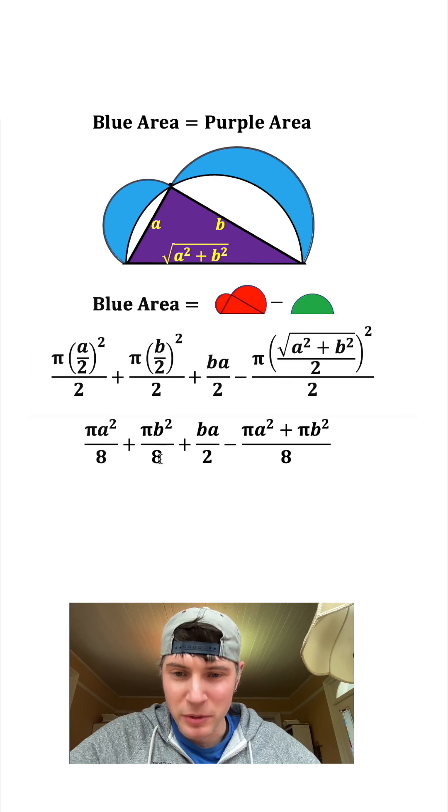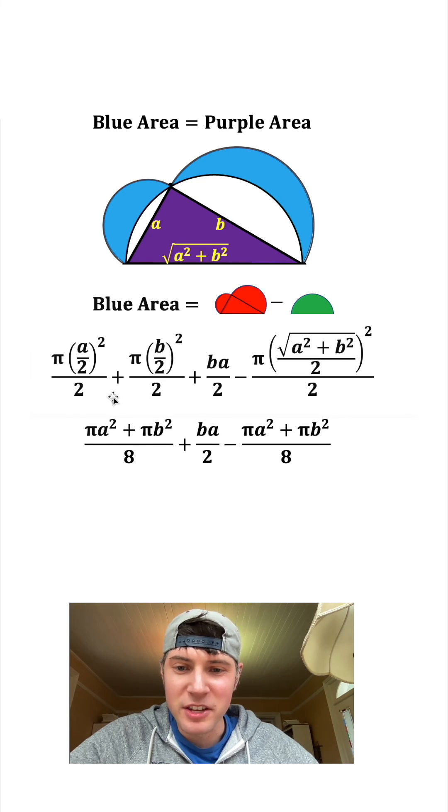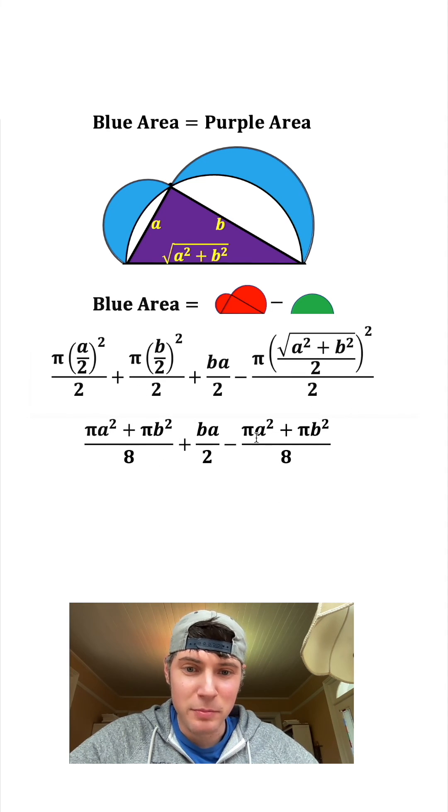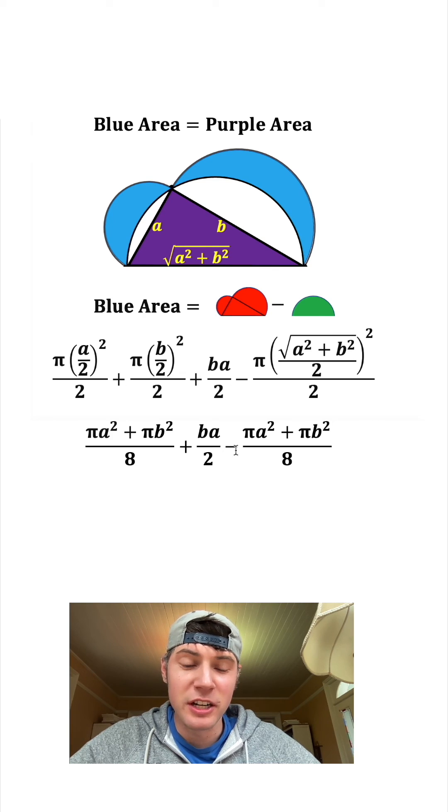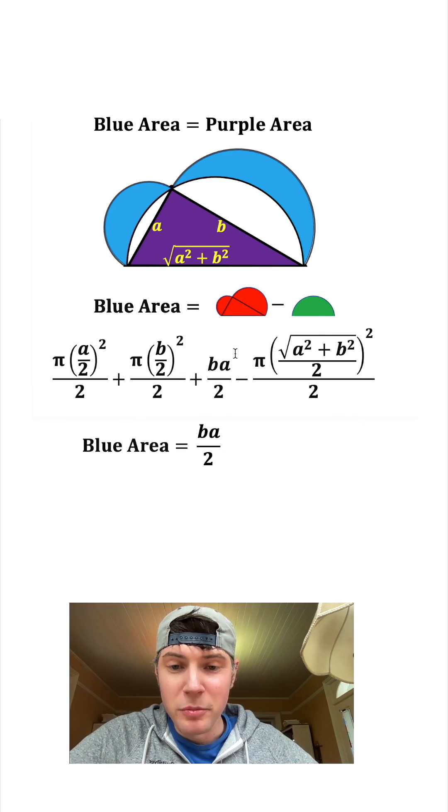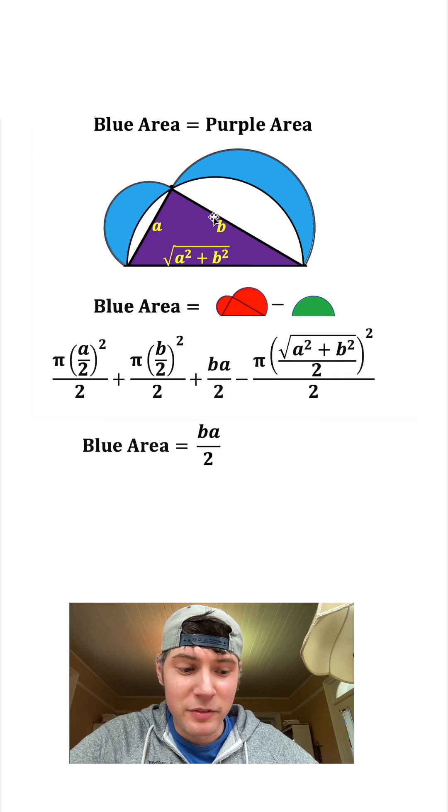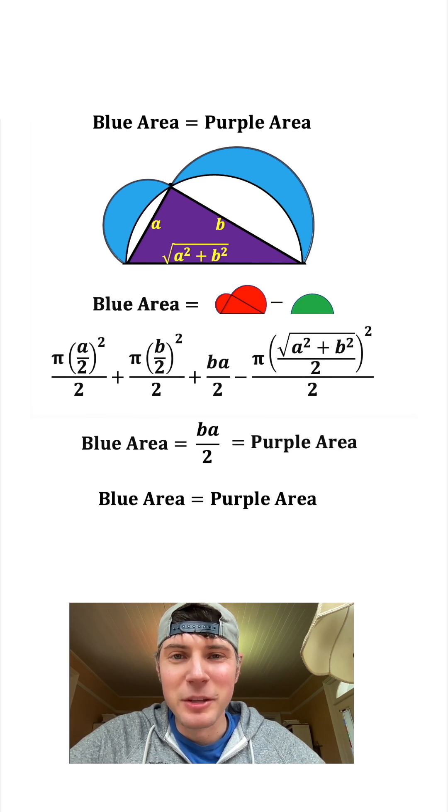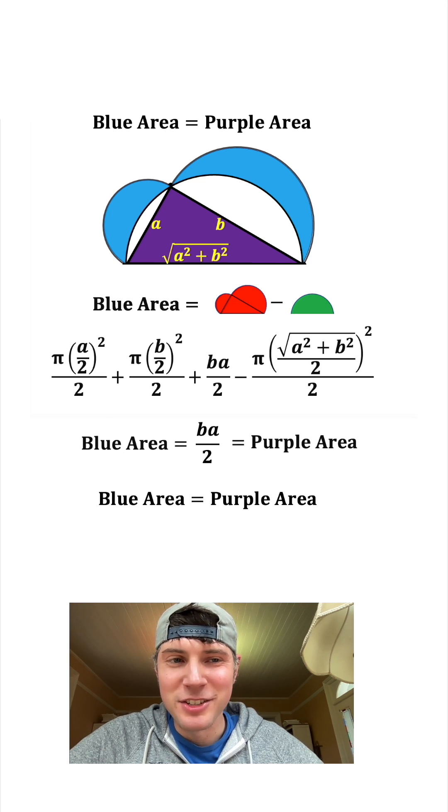These two have a common denominator of 8, so we can join them into a single fraction. This fraction equals this fraction, but this one's being subtracted, so they're just going to get rid of each other. So we're left with B times A divided by 2, and that is the blue area. If you remember, B A over 2 is also the area of the triangle, so that's also the purple area. So we can conclude that the blue area equals the purple area, and this is why.